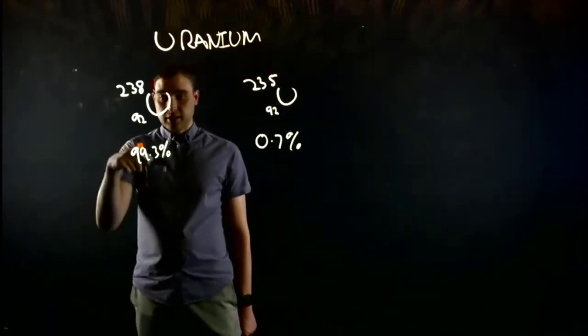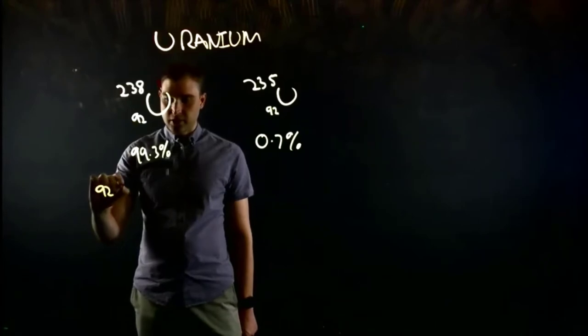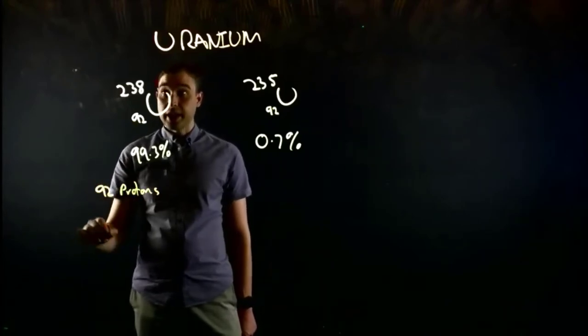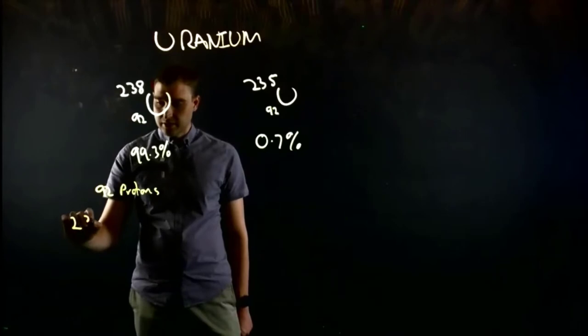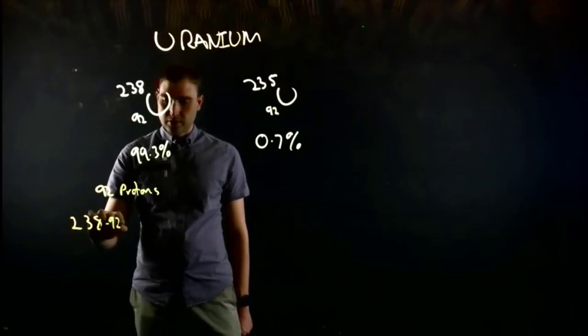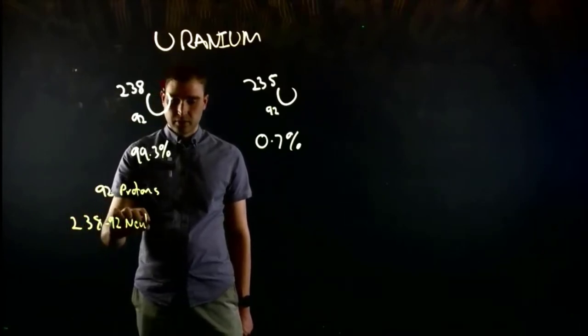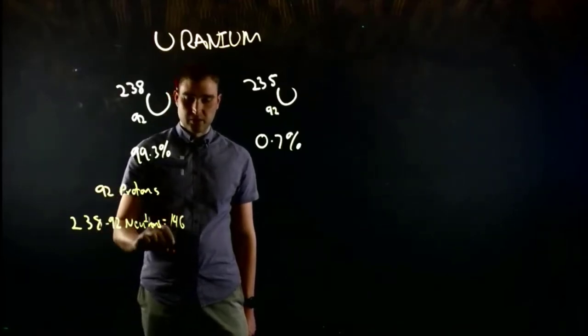So uranium-238, it's got 92 protons, and it has 238 minus 92 neutrons, which is 146 neutrons.